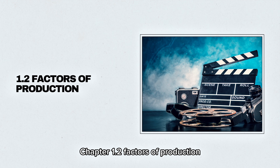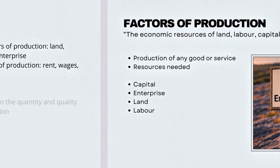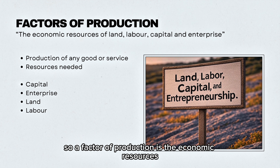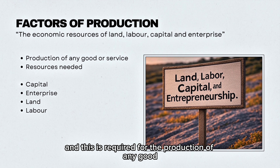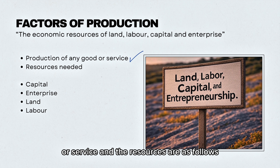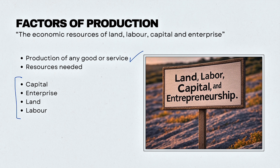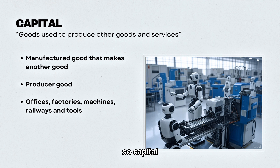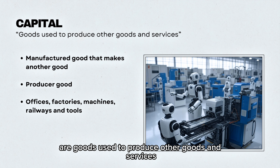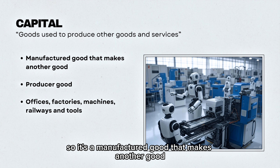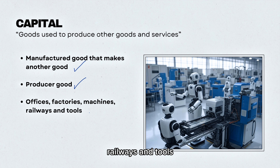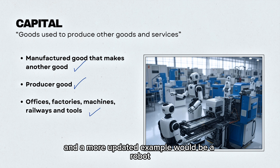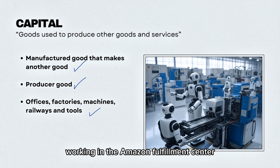Chapter 1.2: Factors of Production. A factor of production is the economic resources of land, labour, capital, and enterprise, required for the production of any good or service. Capital refers to goods used to produce other goods and services — a manufactured good that makes another good, also known as a producer good. Examples include offices, factories, machines, railways, and tools. A more updated example would be a robot working in the Amazon Fulfilment Centre stacking shelves.